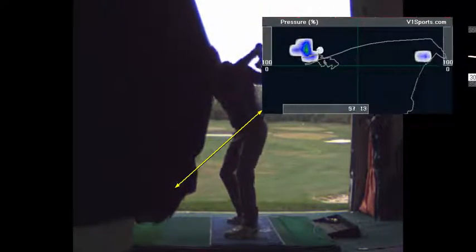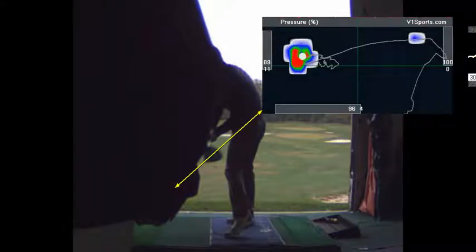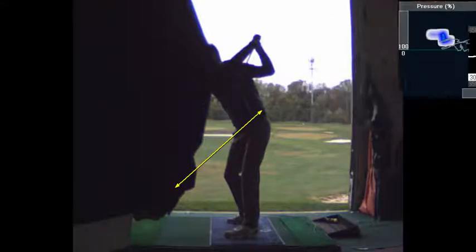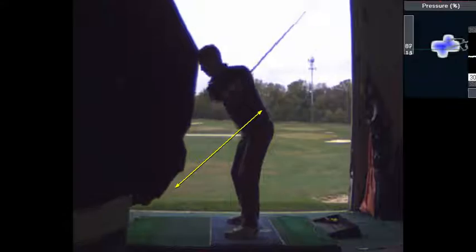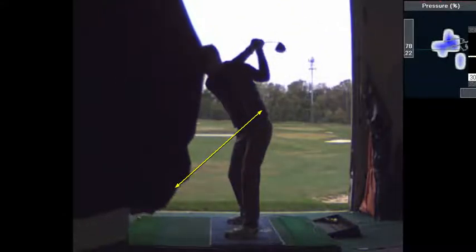If we looked at your numbers, swing path numbers, I would say they're in to out. My only concern is, like I said, can we get the face more square? Can we get the club to feel like it's lower?